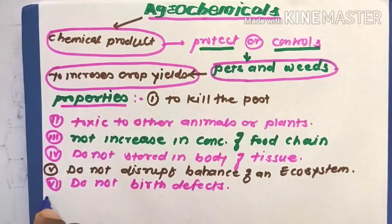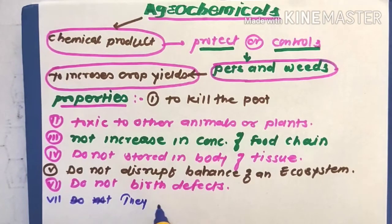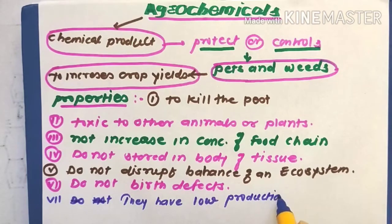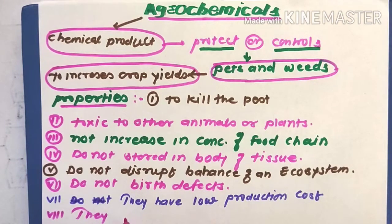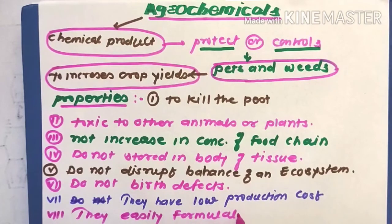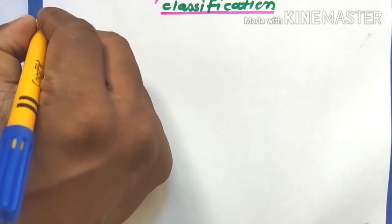The next one is low production cost, and the last one is they should be easily formulated. Then, classification of agrochemicals: there are different classes — insecticide, fungicide, herbicide.